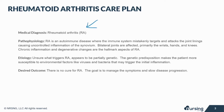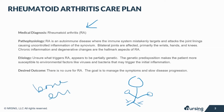RA is an autoimmune disease where the immune system mistakenly targets and attacks the joint linings, causing uncontrolled inflammation of the synovium. Bilateral joints are affected — primarily the wrists, the hands, and also the knees. RA is characterized by bone erosion and joint deformity. As the disease progresses, other joints may be affected symmetrically. Chronic inflammation and degenerative changes are the hallmark aspects of RA.